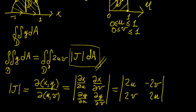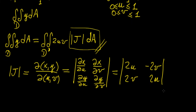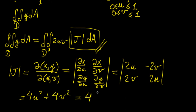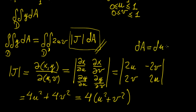We evaluate the determinant by cross multiplication: 2u times 2u gives 4u², minus minus, so plus 4v², which equals 4(u² + v²). We then replace the area element by the new coordinate element du dv.